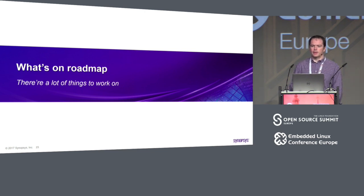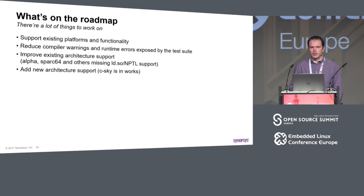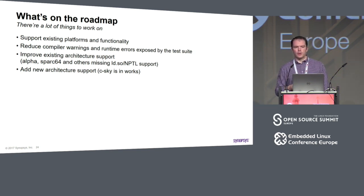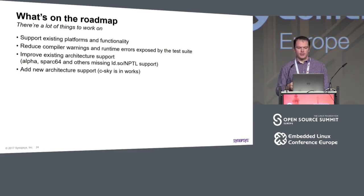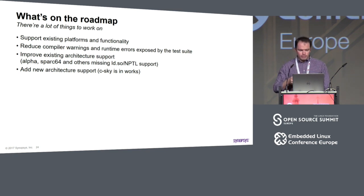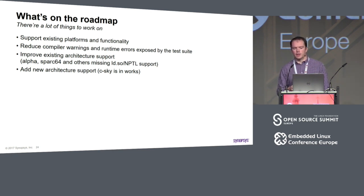What are we planning in the foreseeable future? We are going to keep support of existing functionality, reduce compiler warnings and failing tests with help of the test suite, extend support of existing architectures - like dynamic loader and NPTL for some architectures. New architectures will also be added - C-Sky is in the works and in a couple of weeks or months it will hit upstream.